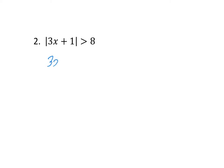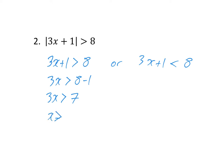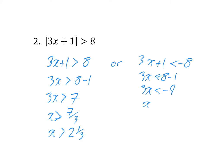Next example: solve modulus of 3x plus 1 is greater than 8. Positive case: 3x plus 1 is greater than 8, so 3x is greater than 7, giving x is greater than 7 over 3, which is 2 and one third. Negative case: 3x plus 1 is less than minus 8, so 3x is less than minus 9, giving x is less than minus 3. Just to highlight the correction: the negative case should have been 3x plus 1 is less than minus 8, as now shown.